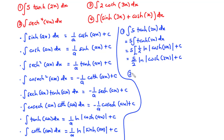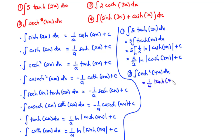Question 2: we have the integral of sech squared 4x dx. The integral of sech squared ax dx equals 1 over a times tanh ax, so you are going to have 1 over 4 times tanh 4x plus c. That's very simple.